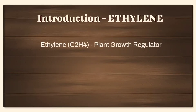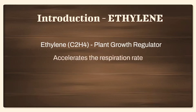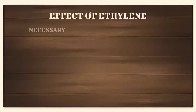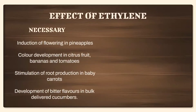Ethylene is basically a plant growth regulator that accelerates the respiration rate and subsequent senescence of horticulture products like fruits, vegetables, and flowers. The effects of ethylene on plants include many necessary processes like the induction of flowering in pineapples, color development in citrus fruits, bananas, and tomatoes, stimulation of root production in baby carrots, and development of bitter flavors in cucumbers.